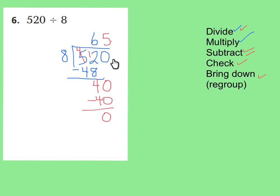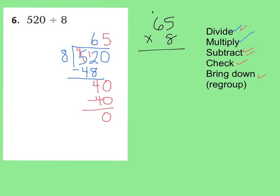There's nothing left to bring down because I've already brought down my ones place and divided with my tens place. Therefore, the correct answer is 65. You can quickly check: 65 times 8 is 520. We got it correct.